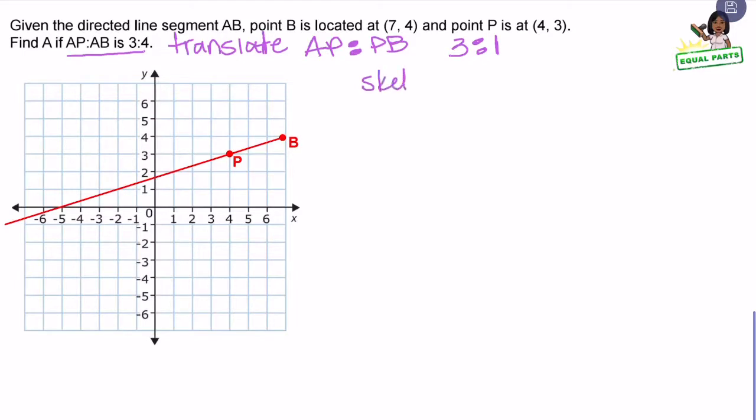Just like before, I'm going to make a sketch of the graph. I have my line segment from A to B. I need to separate the segment into four equal parts.